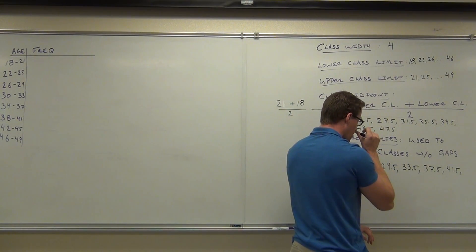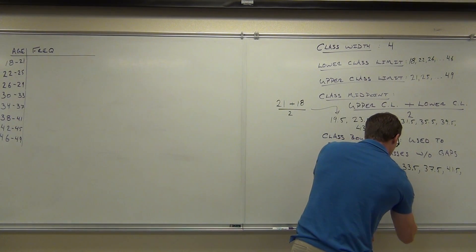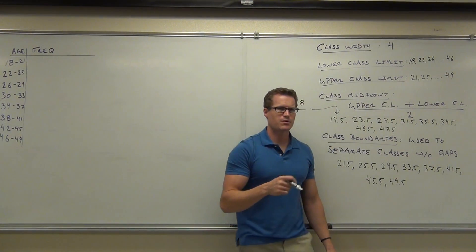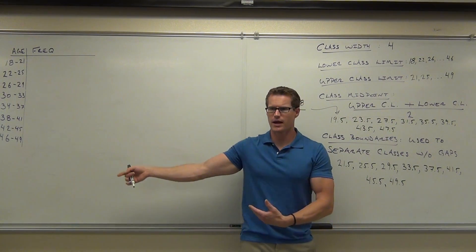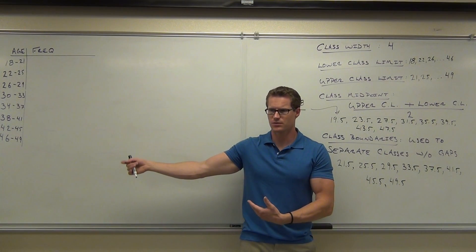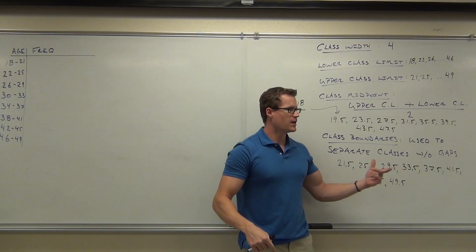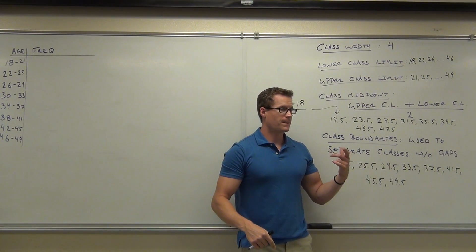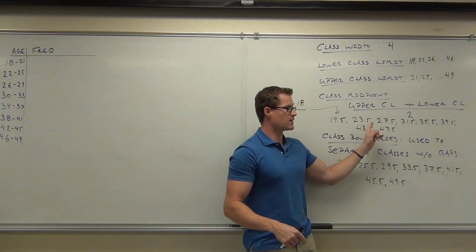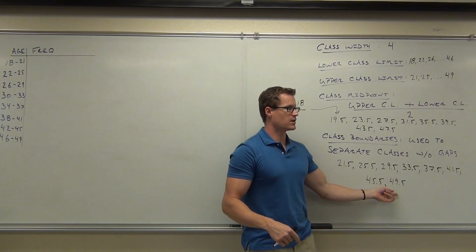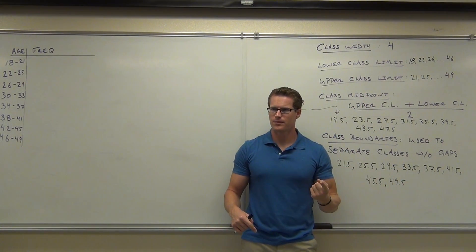How many do we have? Eight. 49.5. Does 49.5 make sense, how we get that? There's not another class, but you see that we're just going up by four every time. I know there's eight here, and eight here, and eight here, and right now we have eight here, but there's actually one more.